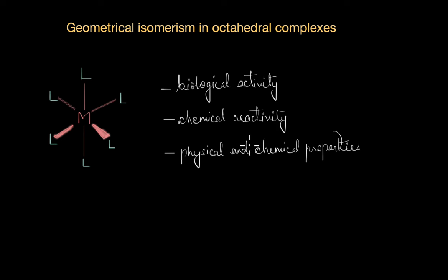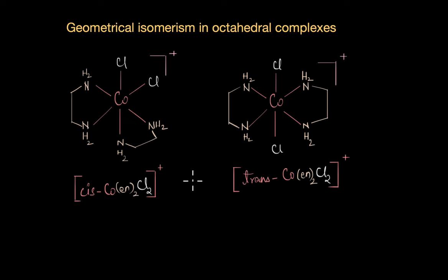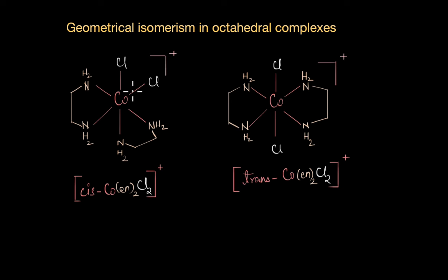To appreciate this, let's look at an interesting compound. Here we have the cis and the trans forms of an octahedral complex, which is [Co(en)₂Cl₂]. Here, 'en' is ethylenediamine, which is a bidentate ligand. Because of the way the ligands are arranged, the cis isomer was found to be much more soluble in water.